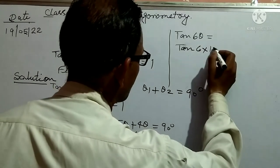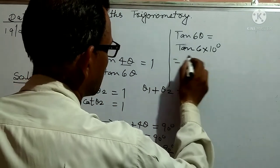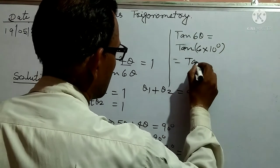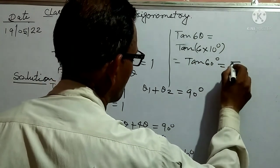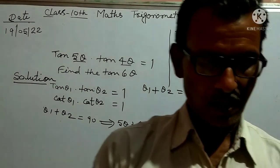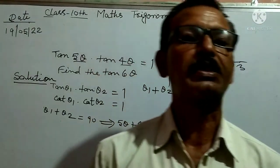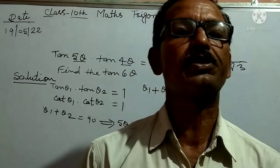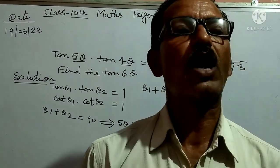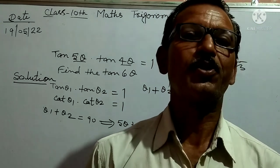tan(6θ) = tan(6 × 10°) = tan(60°) = √3. So this question is solved. If any other students understood this question, please subscribe to my channel and share it with other students. I will provide the next video the next day. Thank you very much.